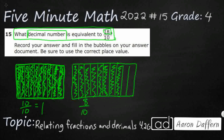Now if I add these two together, I'm going to have ten-tenths plus eight-tenths. Remember, when we add fractions, the numerators get added. The denominators have to be the same, but they don't get added. So there we go — I've got my eighteen-tenths.